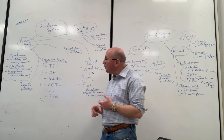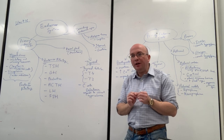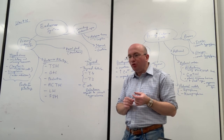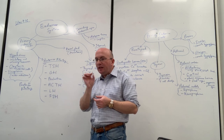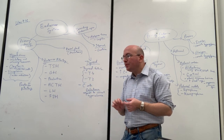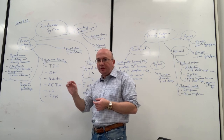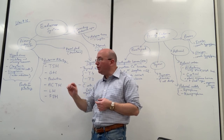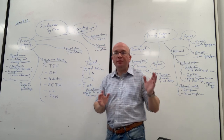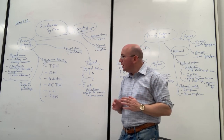Even though the anterior pituitary is a very tiny area, when you see it under a microscope histologically, you can see it has cells of different colors and staining appearances that are responsible for synthesizing and secreting multiple hormones into the bloodstream, controlling a wide variety of body functions. These hormones are: TSH (thyroid-stimulating hormone), GH (growth hormone), prolactin, ACTH (adrenocorticotropic hormone), LH (luteinizing hormone), and FSH (follicle-stimulating hormone).